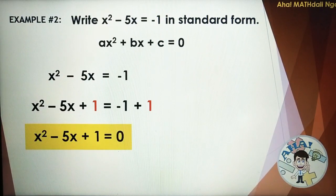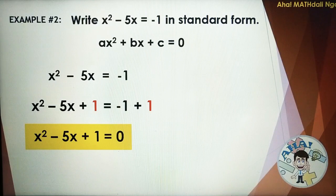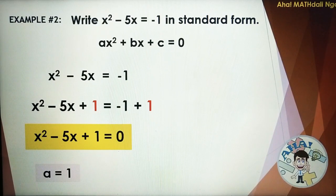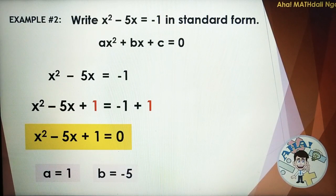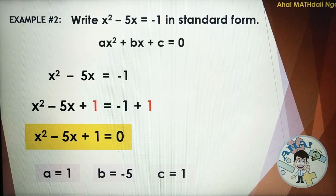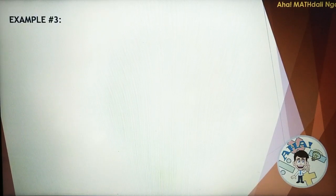This is now the equation in standard form. Let's find A, B, and C: A is equal to positive 1, B is equal to negative 5, and C is equal to positive 1.